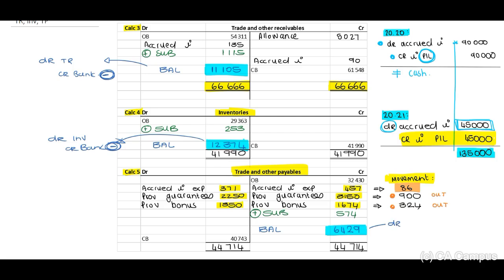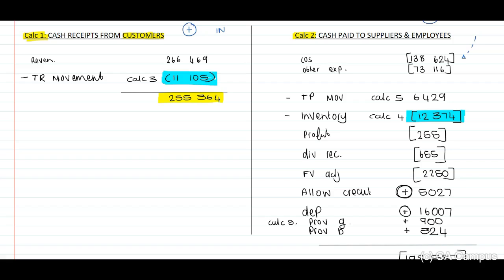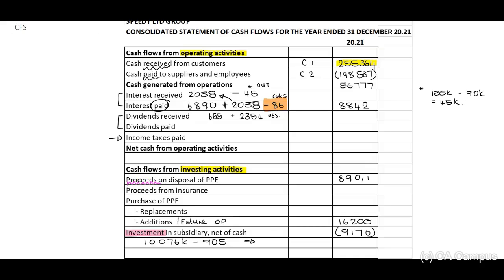For trade payables: the bank and credit of trade payables shows an increase — trade payables increase on the credit side. Transfer that amount to Calculation 2: 6,429. We are then able to calculate our total: 198,587. Transfer this — 198,587 — and we are able to include our cash generated from operations: 56,677.